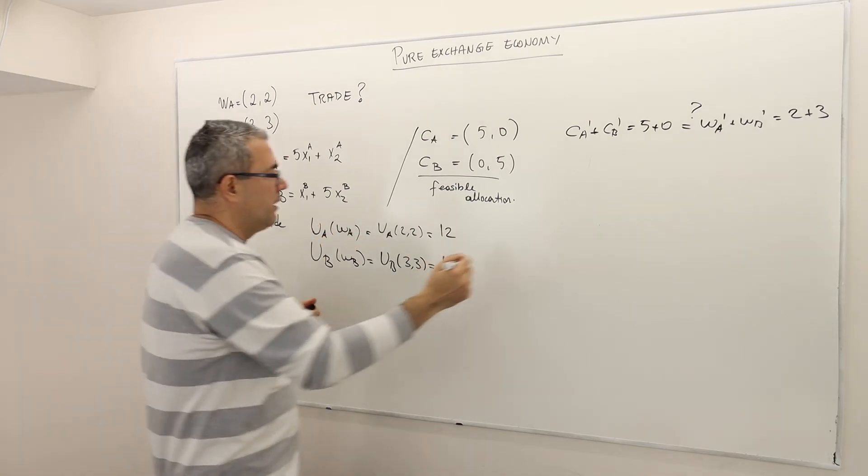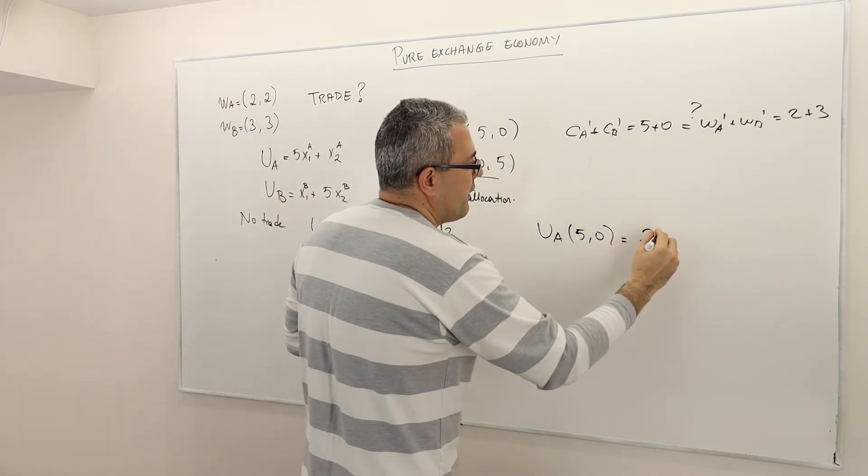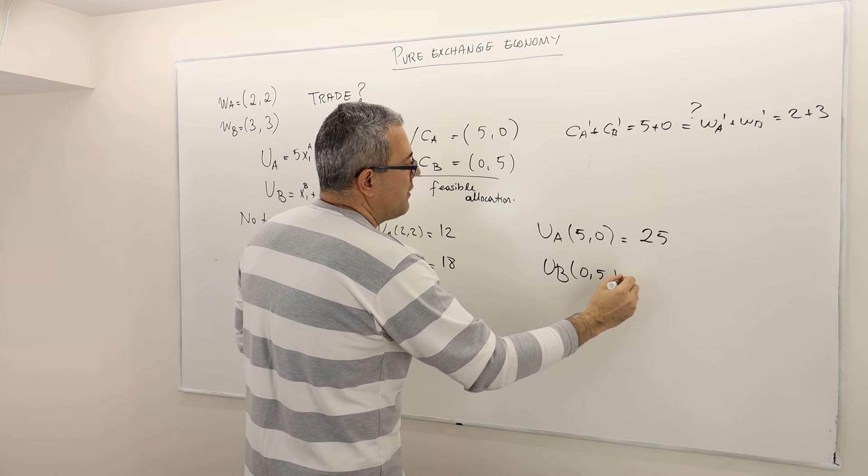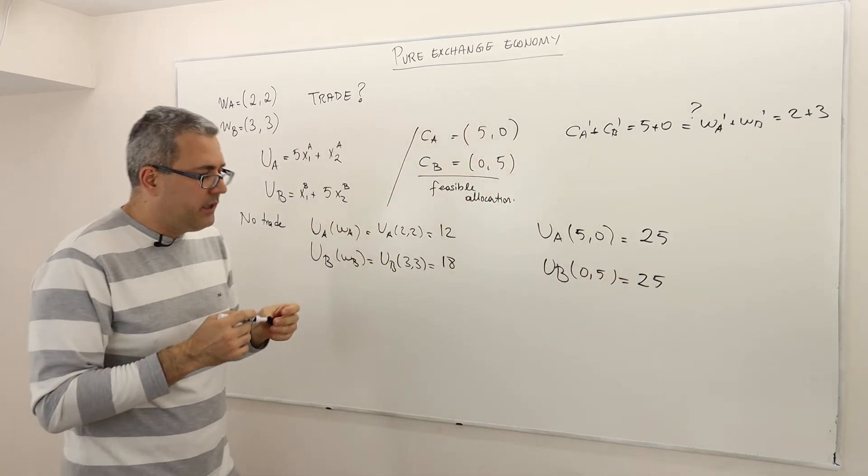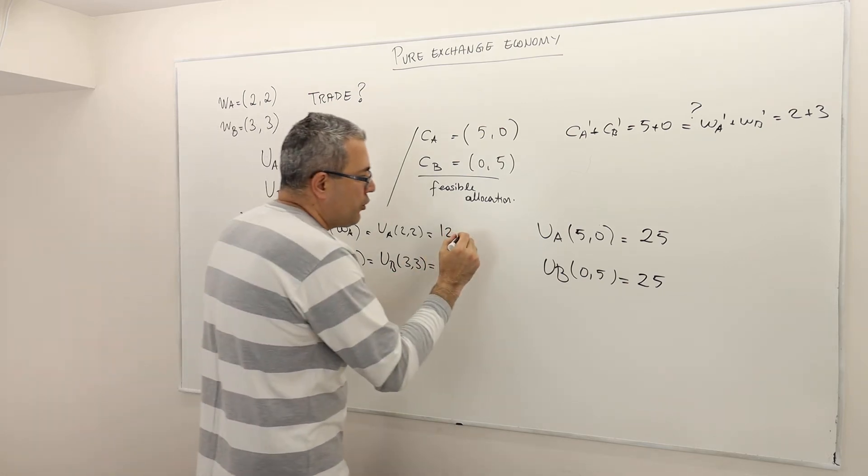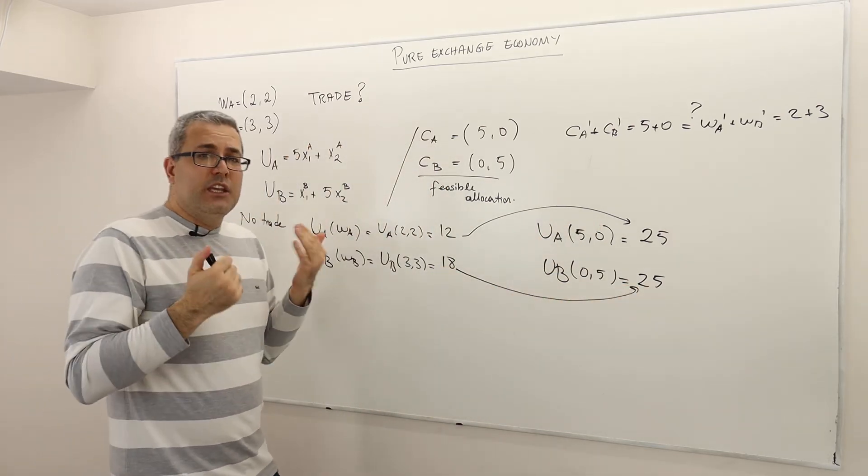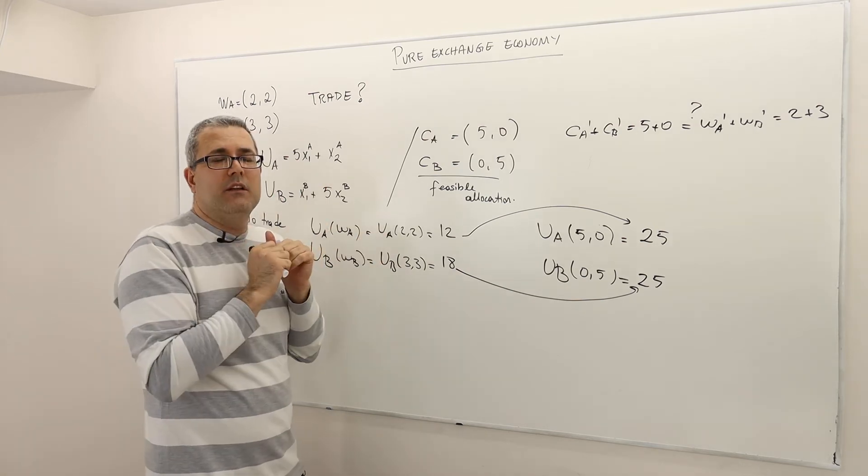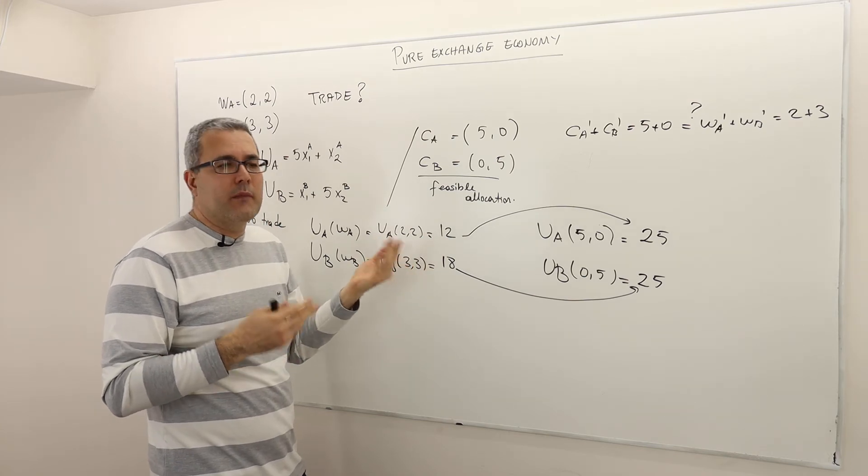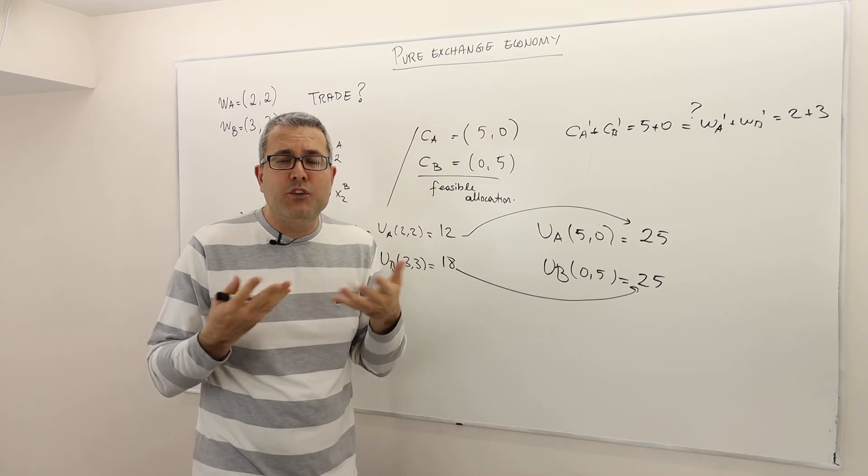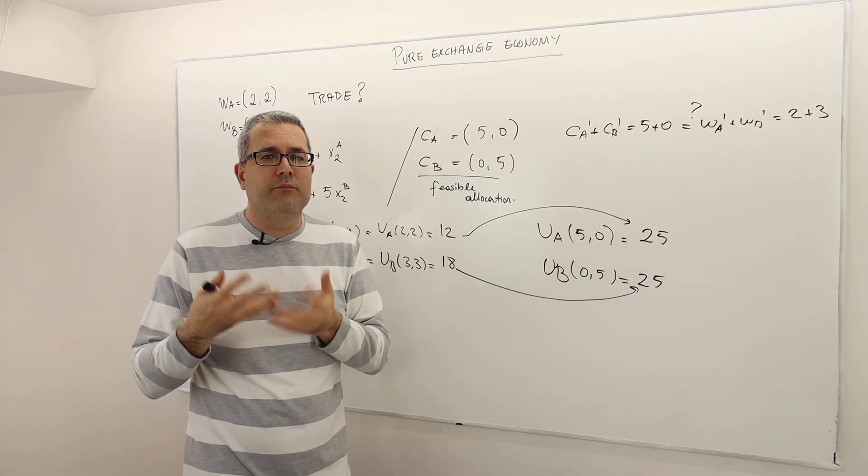Question is, do they get higher utility? What would be utility of Agent A if he consumes (5,0)? It's 5 times 5 plus 0, so it's 25 units. What about Agent B? He consumes 0 units of good 1, 5 units of good 2, so 5 times 5, again 25. Now their level of utilities are the same. Initially their utilities would be 12 and 18. However, if they exchange their goods, they both can enjoy higher levels of utilities. They can get happier if they exchange or if they trade.